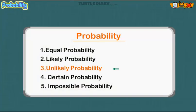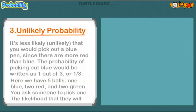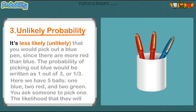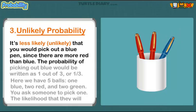The probability of picking a red ball would be one-third. It would be less likely that you would pick out a blue pen, since there are more red than blue. The probability of picking out blue would be written as one out of three, or one-third.